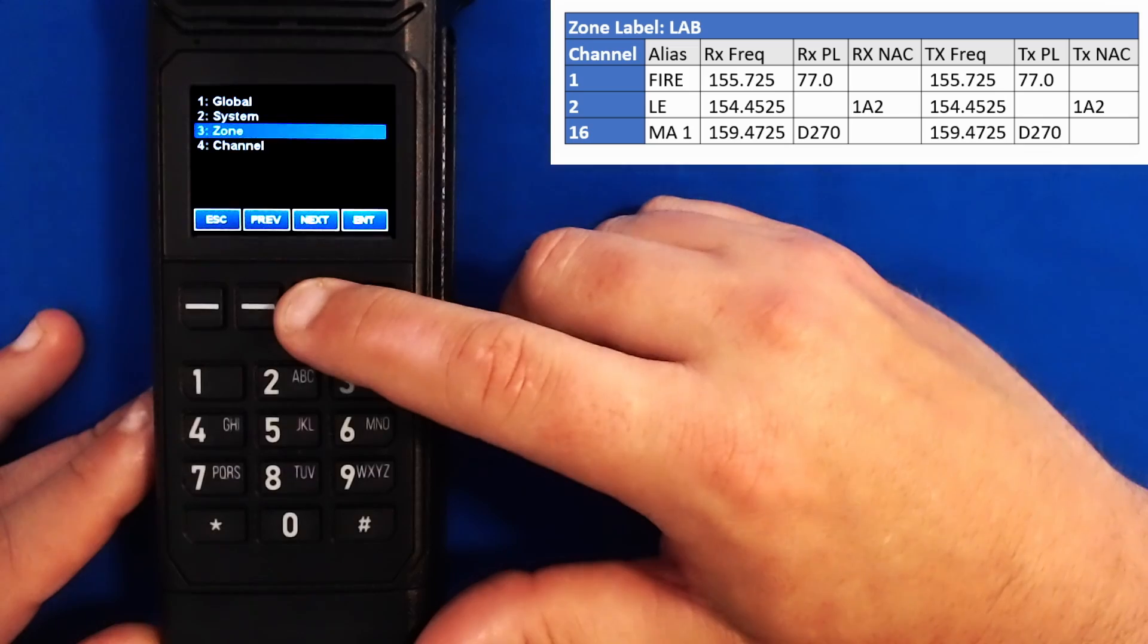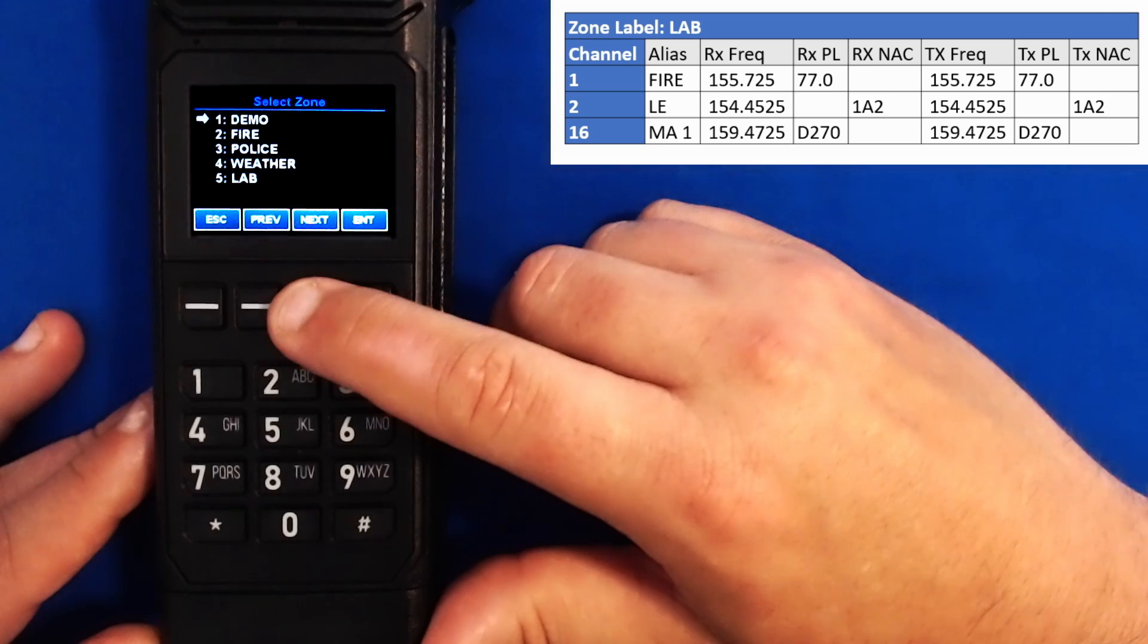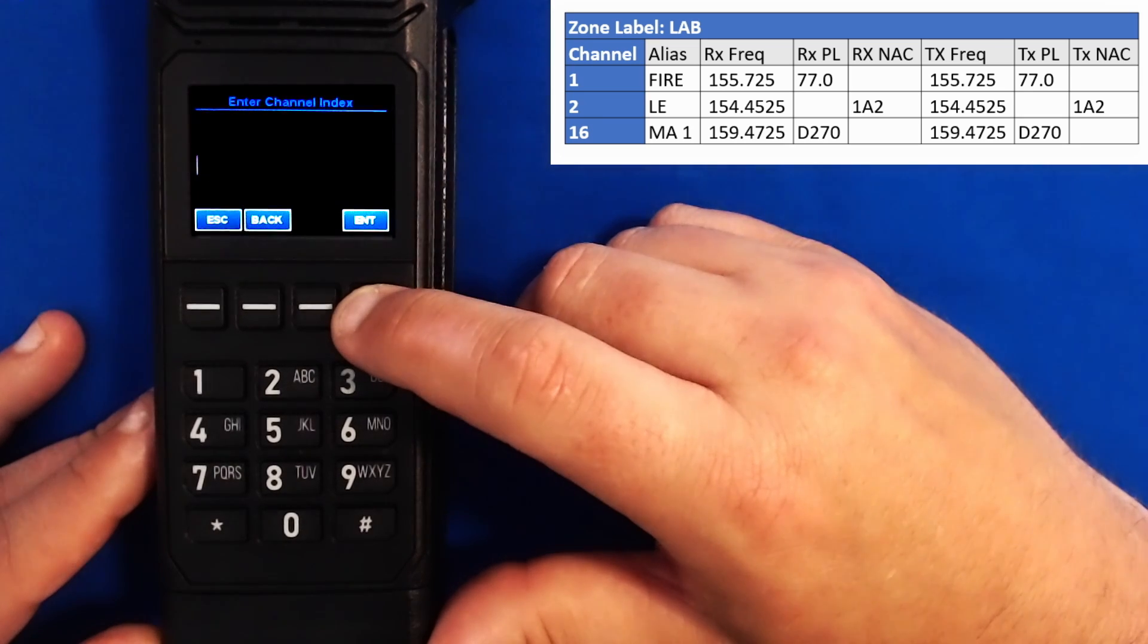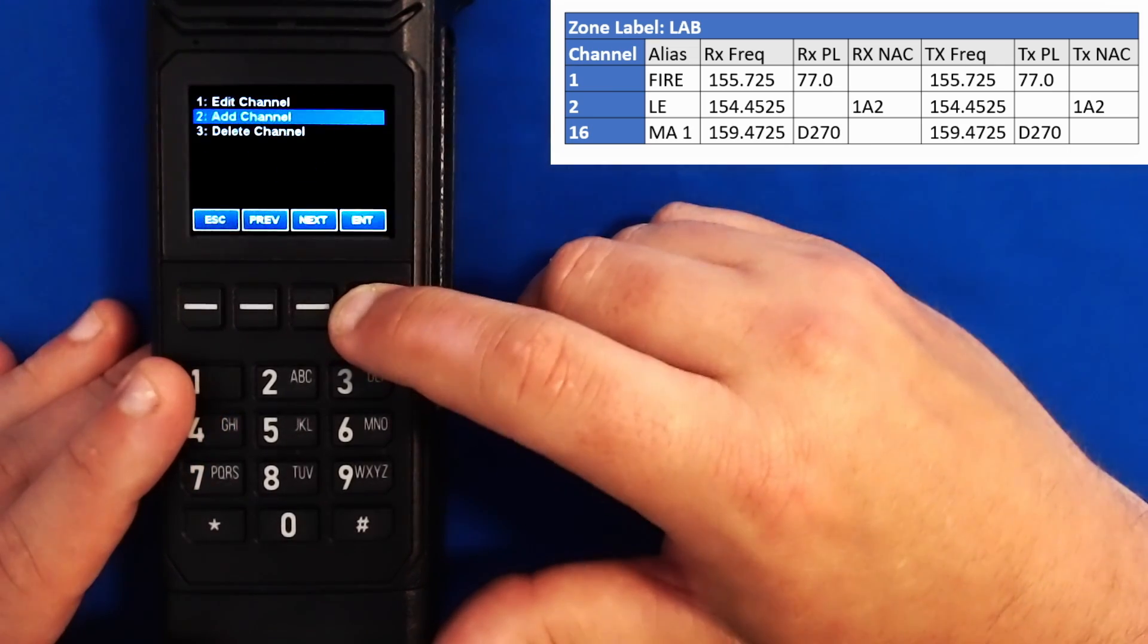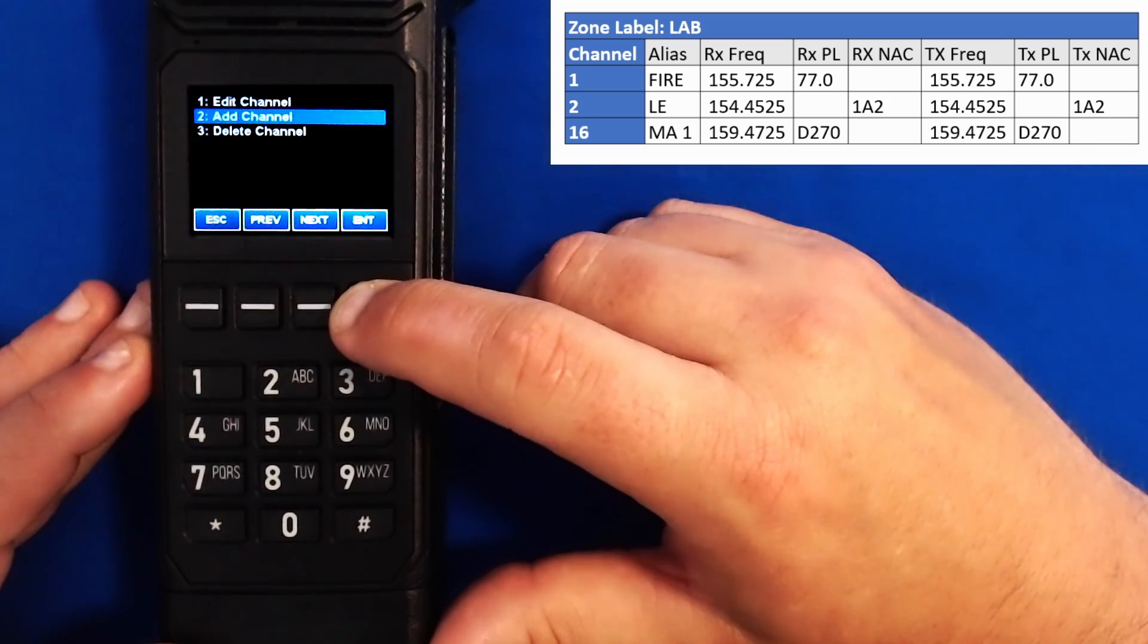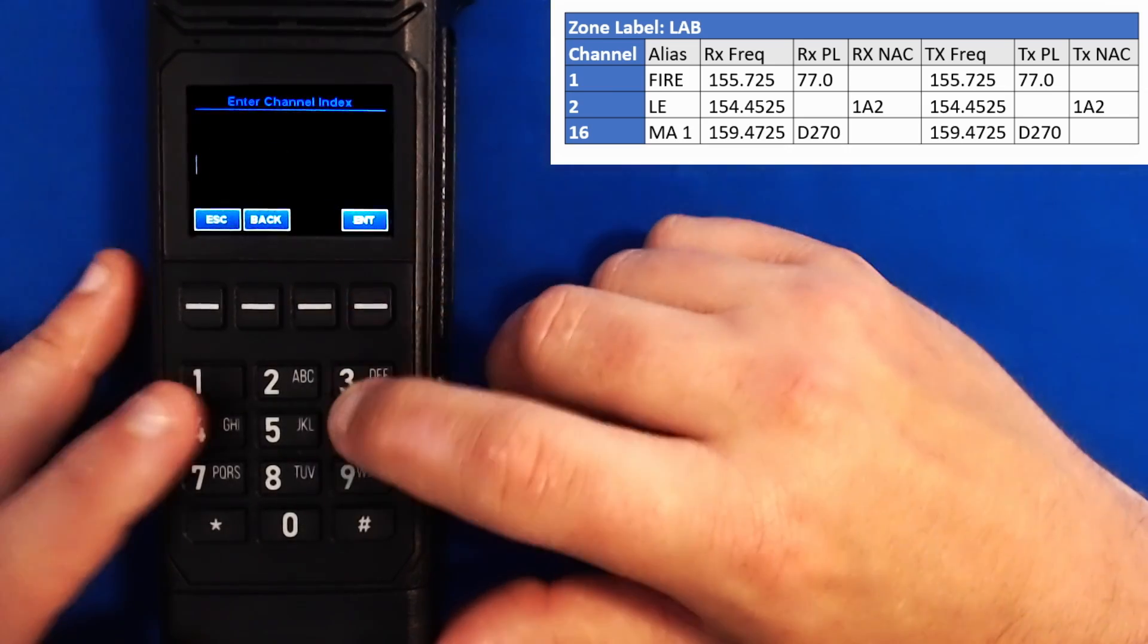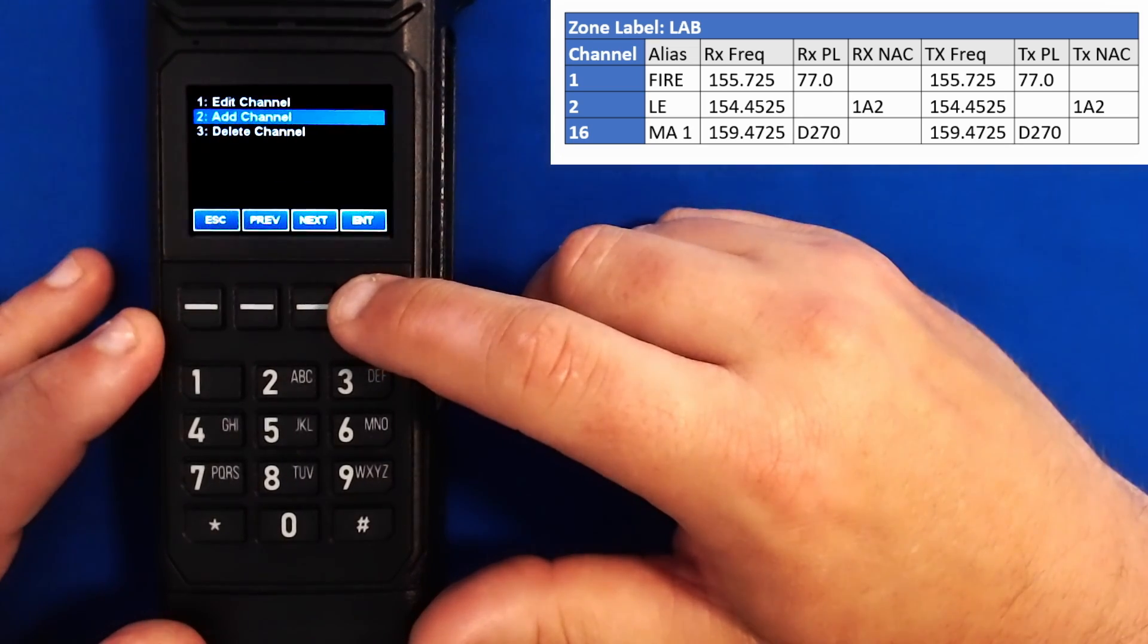And now we can select channel to add channels to our zone. We'll go to add channel. Now we must select the zone we wish to add our channel to. In this case, zone 5, our lab zone. From here we're going to enter the channel index. This is where the channel will be found on the knob position. So I'm going to input 1 for adding channel 1. I'm going to press enter to add another channel, scroll down to our lab zone, select 2 to add channel 2. Press enter to add another channel, go down to the lab zone and press 16.